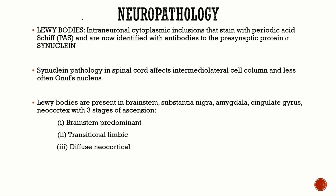Coming to the neuropathology: as the name suggests, Lewy body dementia is characterized by the presence of Lewy bodies — intraneuronal cytoplasmic inclusions that stain positively for periodic acid-Schiff and are identified with antibodies against the presynaptic protein synuclein. That is why it is also known as an alpha-synucleinopathy. These Lewy bodies are not present only in the substantia nigra; they are present throughout the brain.